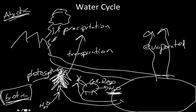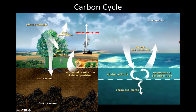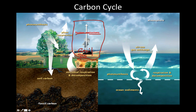So the water cycle is still the water cycle — we just need to include the biotic parts, especially as it pertains to photosynthesis and cellular respiration. The next cycle is the carbon cycle. A lot of people get fixated on human emissions, where you take fossil fuels and burn them in combustion, which releases carbon dioxide. That does happen, but it's not the most significant part.